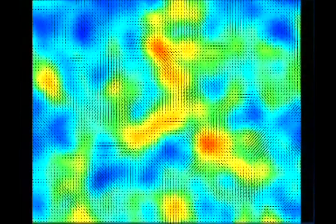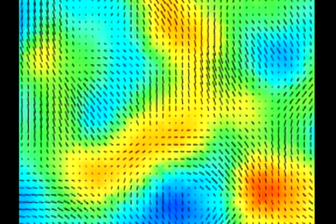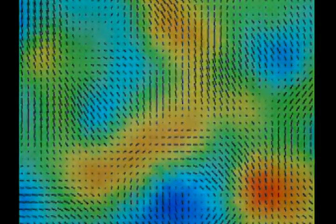The NIST detector records the faint signals left over from the Big Bang, known as the cosmic microwave background. The technique will measure the polarization of the background microwaves, the patterns and directions in the microwave's electric fields.